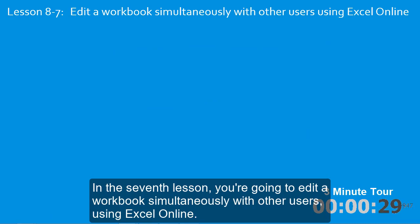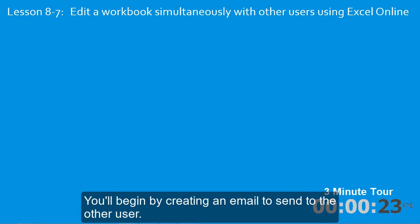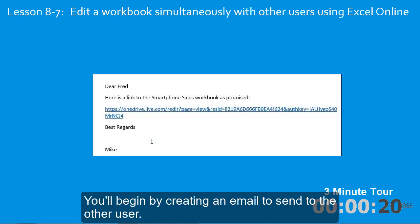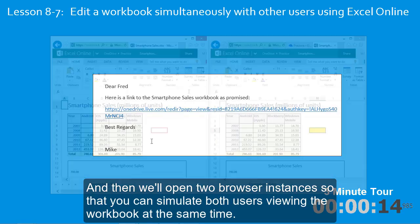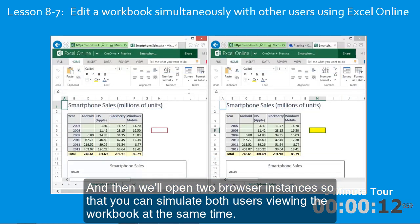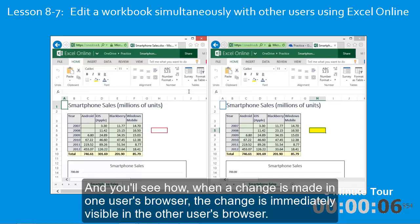In the seventh lesson, you're going to edit a workbook simultaneously with other users using Excel Online. You'll begin by creating an email to send to the other user — we'll imagine this other user is in a different part of the world. Then we'll open two browser instances so that you can simulate both users viewing the workbook at the same time, and you'll see how, when a change is made in one user's browser, the change is immediately visible in the other user's browser.